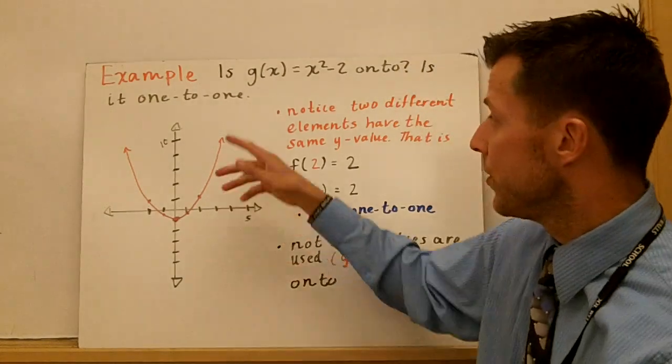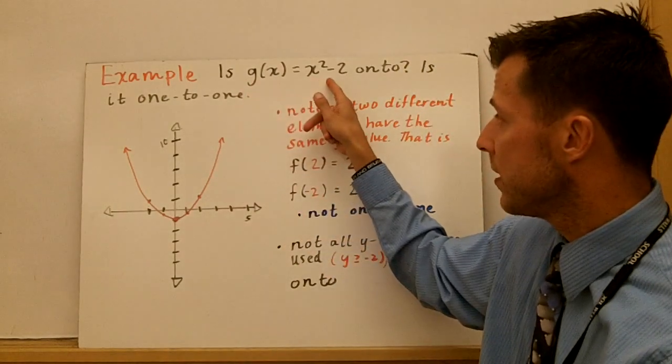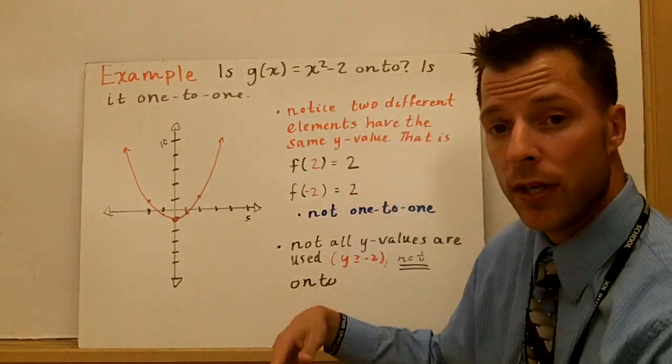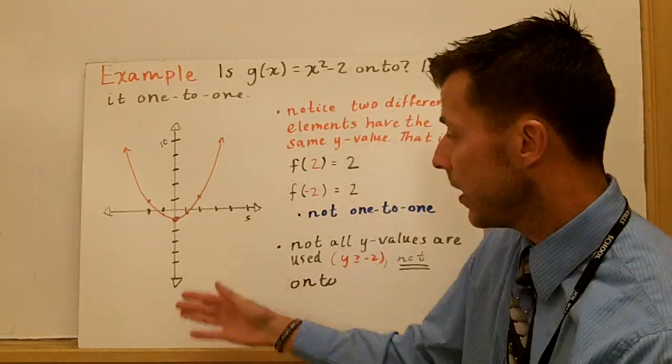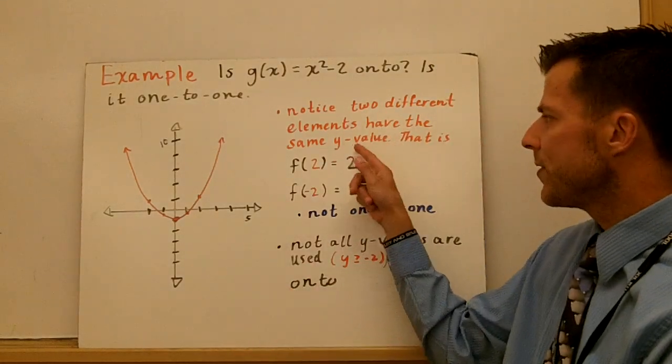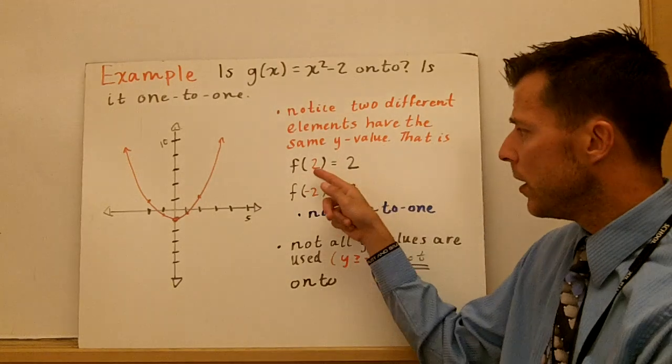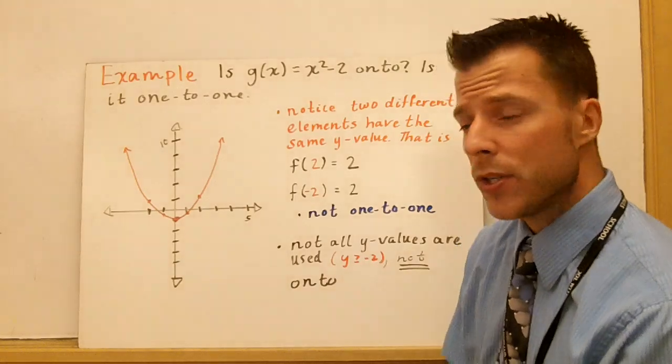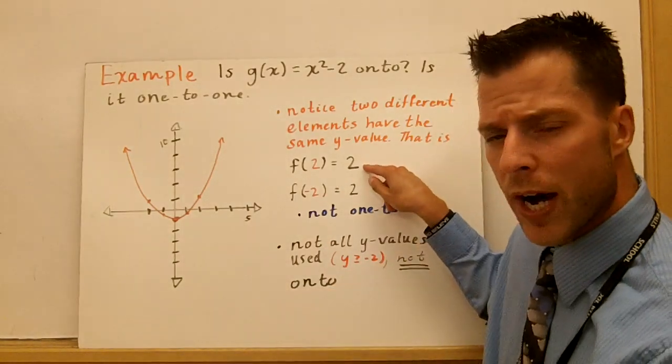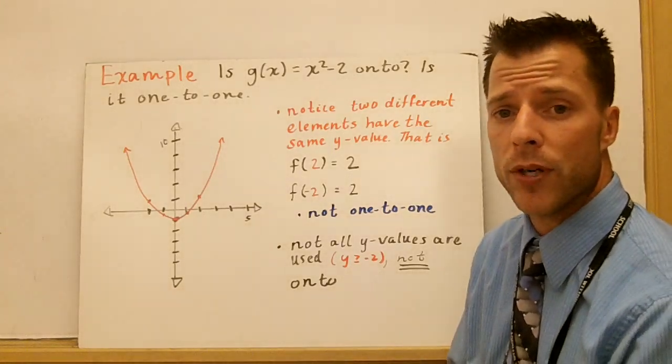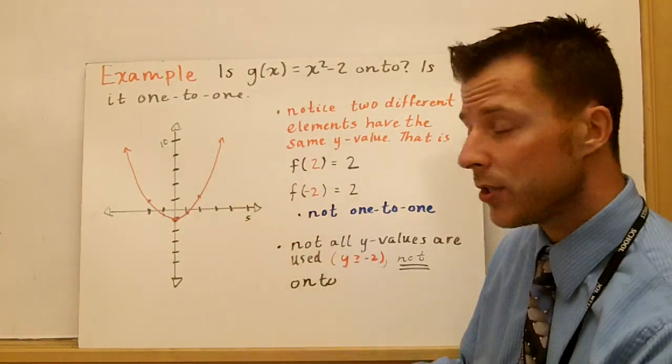Now I threw up a parabola here in example two. Is the function g(x) = x² - 2 one-to-one? Is it onto? So I plot my function here, and I notice that two different elements have the same y value, and that's not cool. If f(2) = 2 and f(-2) also equals 2. So the same y value is paired with two different x's. That's a problem for one-to-one. This function is not one-to-one.